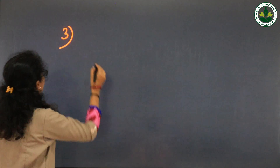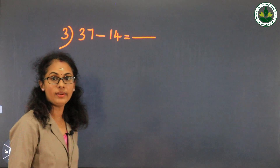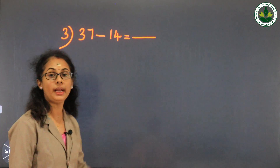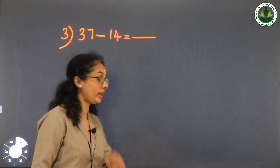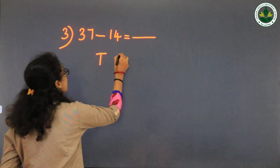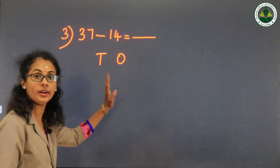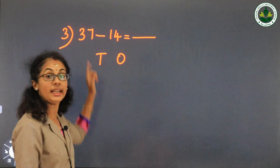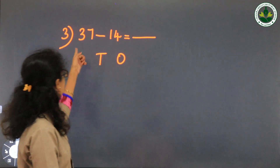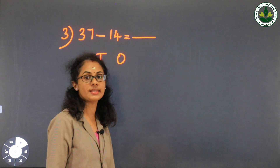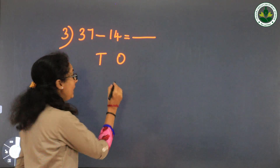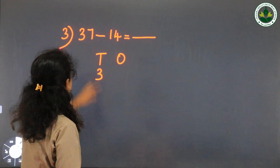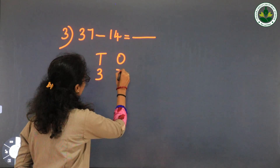37 minus 14 equals dash. First write T and O — tens and ones. In 37, there are 3 tens and 7 ones. Write 3 in the tens column and 7 in the ones column.